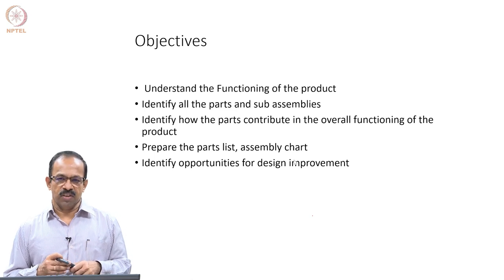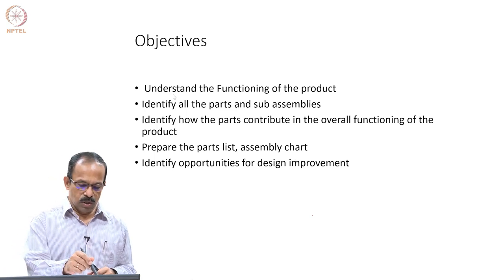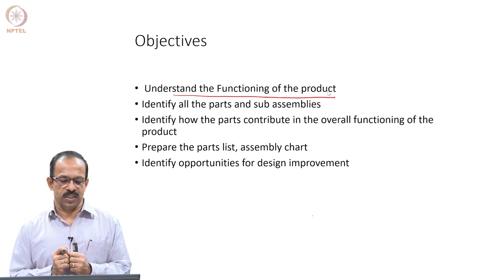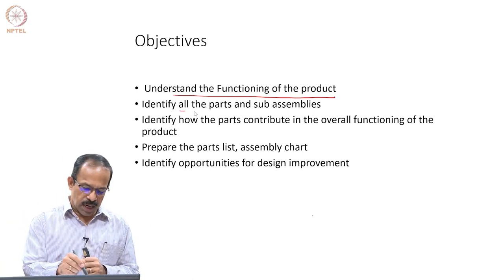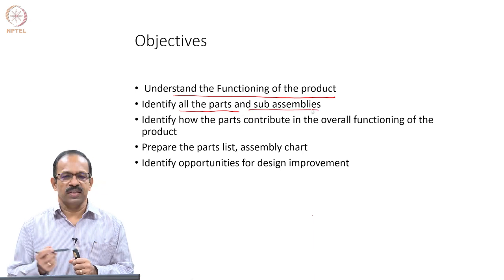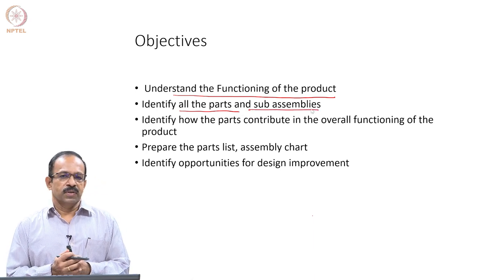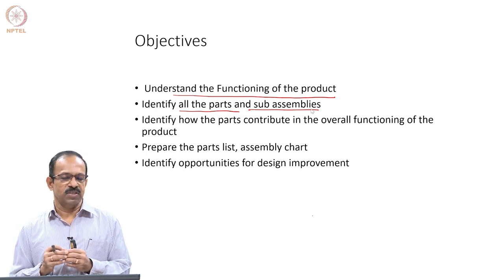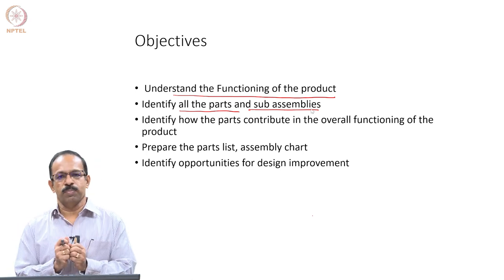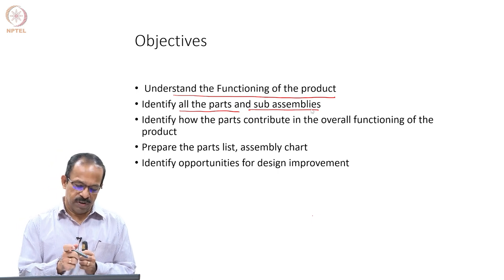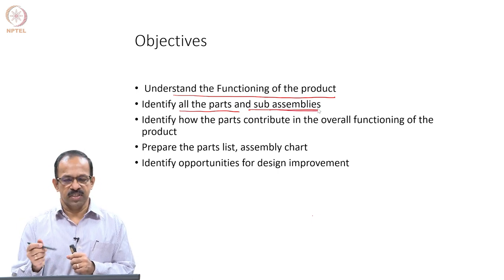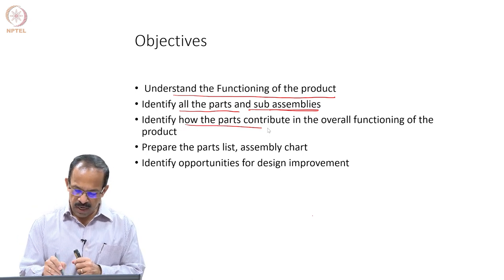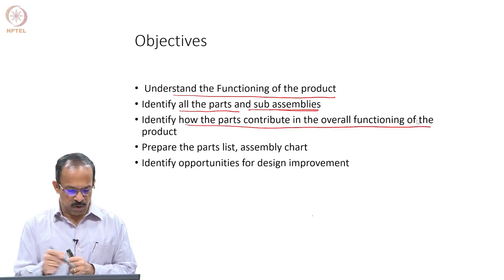The objectives, as in the previous experiment, are: first, you want to understand the function of the product — what is the overall function? Then, what parts and sub-assemblies are there in the product? Any product will have many parts and some sub-assemblies which provide a particular function. You want to identify all those parts and sub-assemblies, and then look at how the parts contribute to the overall functioning of the product.